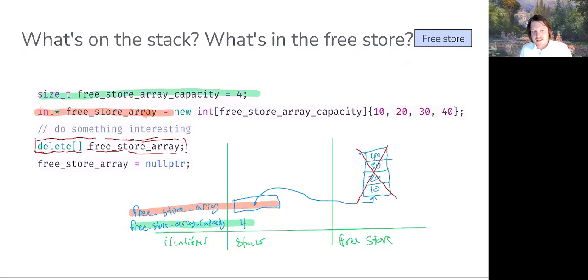So why is it important to update the value of free_store_array to null pointer? Because we probably want to disrupt that relationship as well. Free_store_array directly after the call to the delete operator is going to be what's known as a dangling pointer. It's pointing to memory that is no longer allocated for.